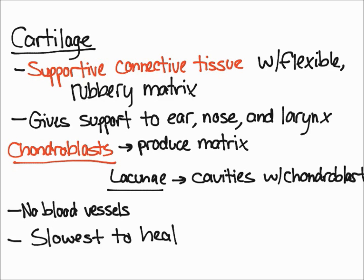Cartilage is the slowest type of tissue to heal because it has a low rate of metabolism, and therefore it also has a low rate of mitosis.